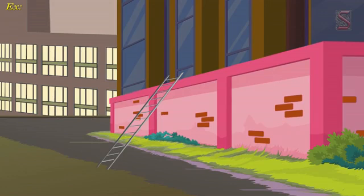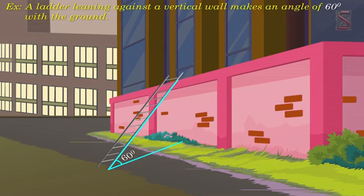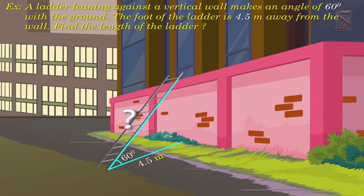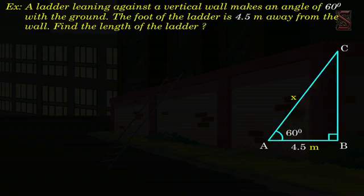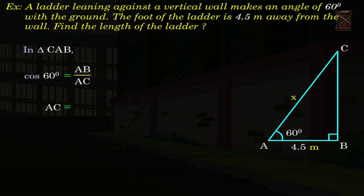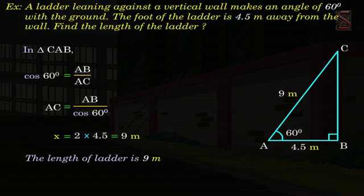Example 2: A ladder leaning against a vertical wall makes an angle of 60 degrees with the ground. The foot of the ladder is 4.5 meters away from the wall. Find the length of the ladder. Solution. Let AC denote the length of the ladder and let it be x meters, and let B be the foot of the wall. Then angle CAB is 60 degrees. From triangle CAB, cos 60 degrees is equal to AB by AC. This implies AC is equal to AB by cos 60, that is x is equal to 2 into 4.5, which is equal to 9 meters. Thus, the length of the ladder is 9 meters.